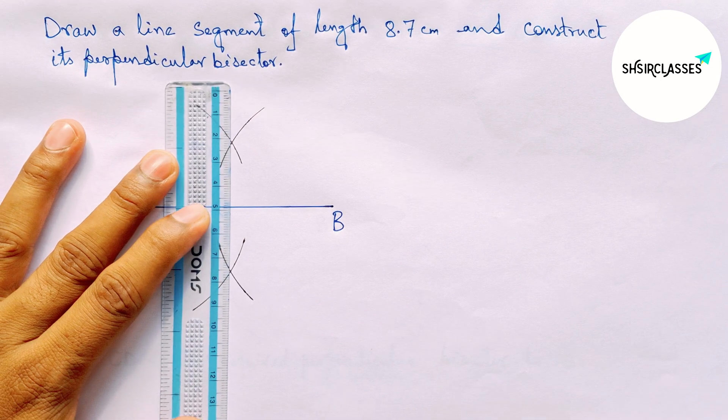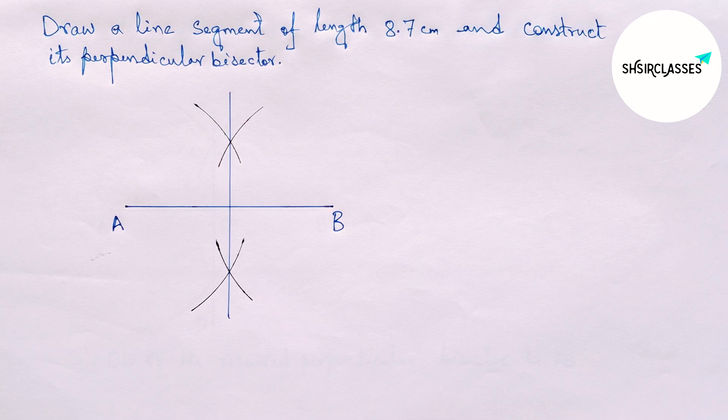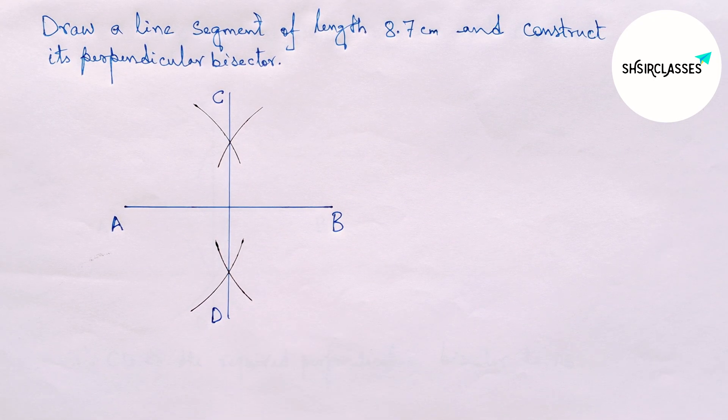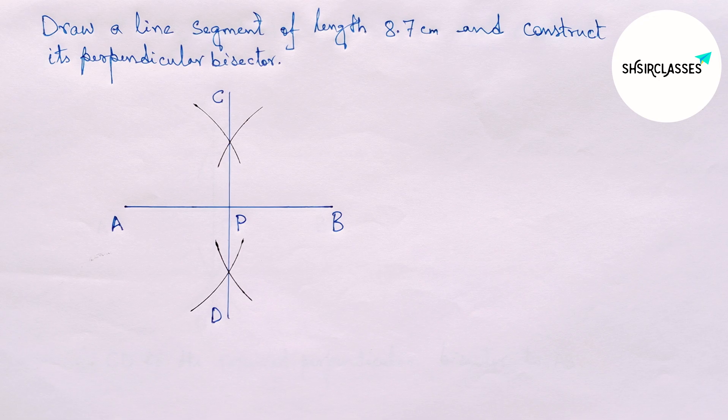Now joining this, this is the required perpendicular bisector. Labeling here C and D. AB and CD both intersect at a point, so taking here point P.